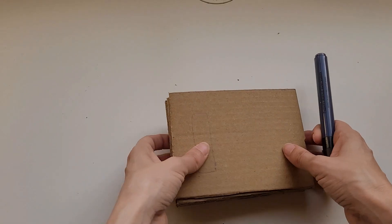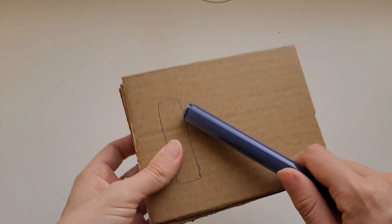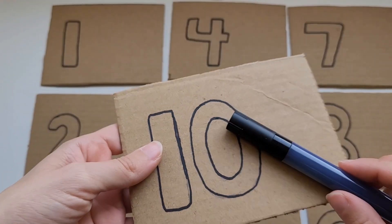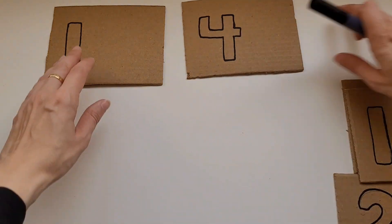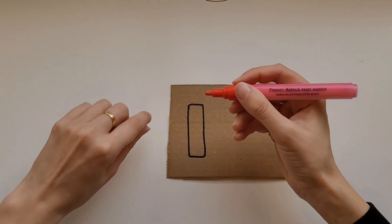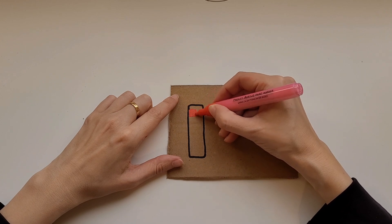Next we're going to outline each of the numbers. And then after that we can start by coloring the numbers. I'm going to use different colors. That way we can also use this activity to talk about colors.